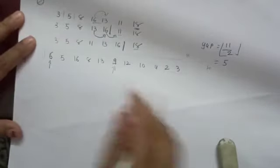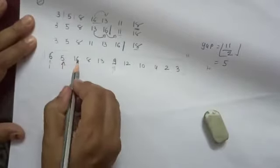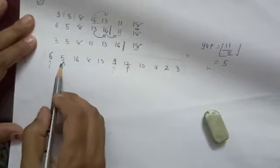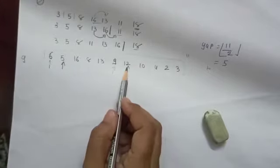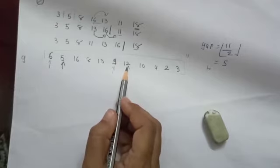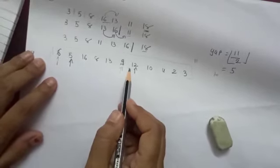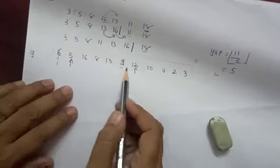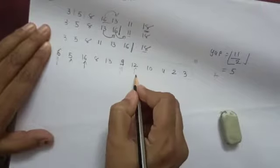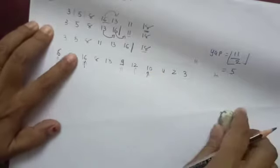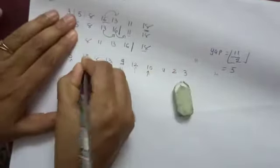Now we will shift the pointers. This pointer comes to index 1 (element 5) and gap distance index 6 (element 12). We perform Insertion Sort on 5 and 12 — as 5 is smaller than 12, no swapping needed. Next, shift the pointer again to index 2 (element 16) and index 7 (element 10). As 10 is smaller than 16, 10 comes here and 16 comes here.